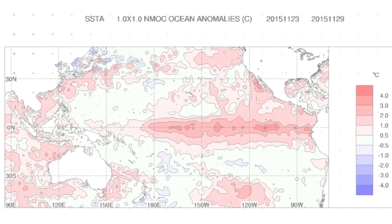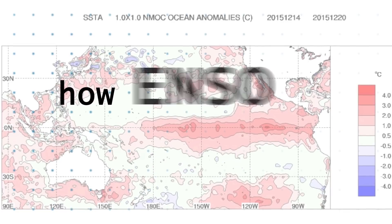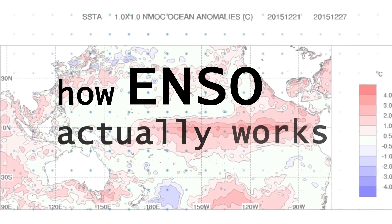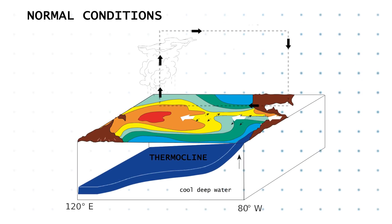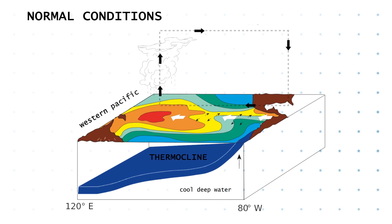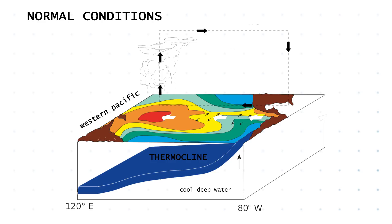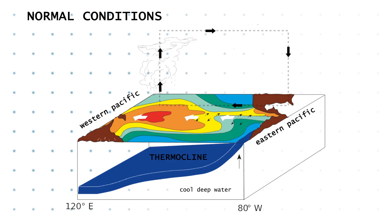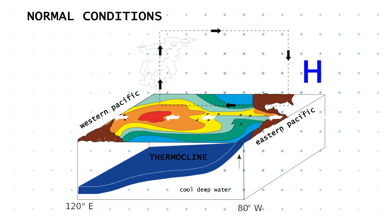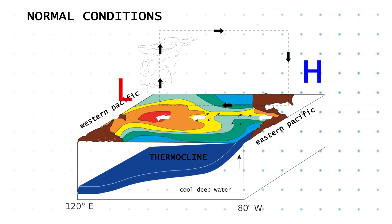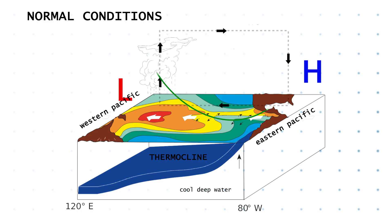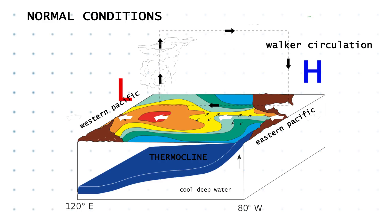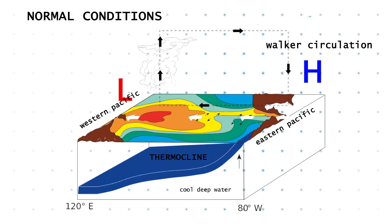Before we go too far, let's talk about how ENSO actually works. Under normal conditions, the western tropical Pacific is warmer than the eastern Pacific, which creates a gradient of high pressure in the east and low pressure in the west. This whole cycle is called the Walker circulation, describing how equatorial winds flow from high pressure down to low pressure.